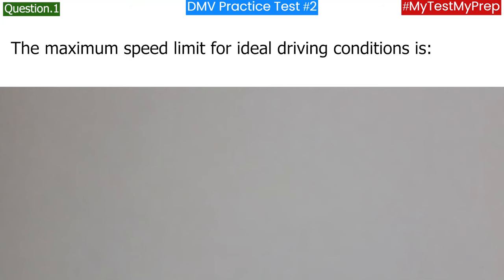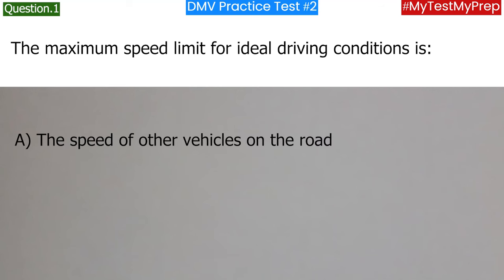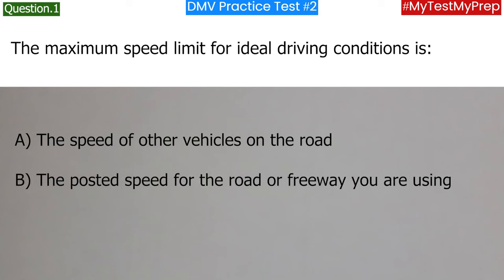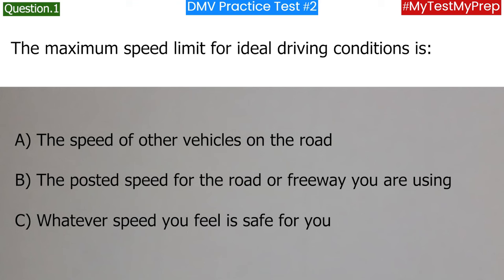The maximum speed limit for ideal driving conditions is: a. The speed of other vehicles on the road; b. The posted speed for the road or freeway you are using; c. Whatever speed you feel is safe for you. Answer: b. The posted speed for the road or freeway you are using.